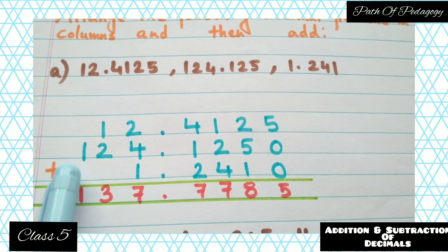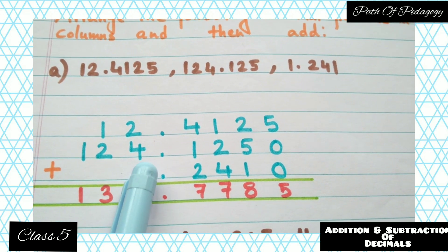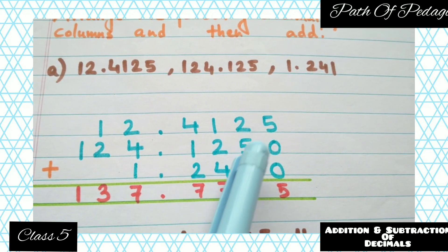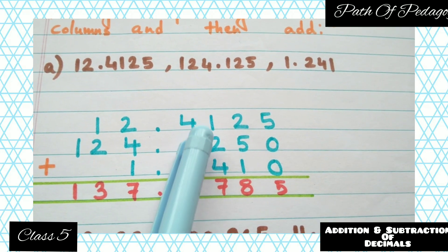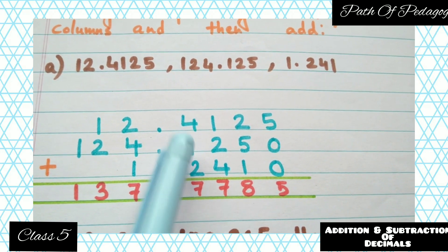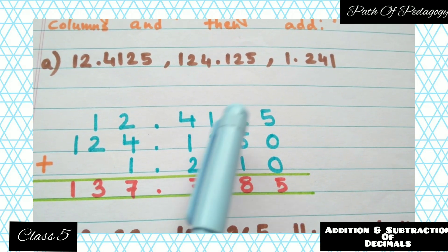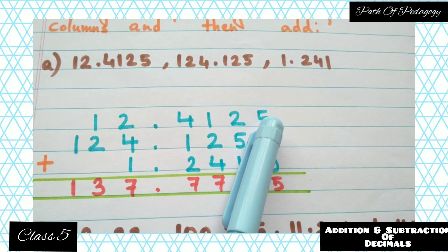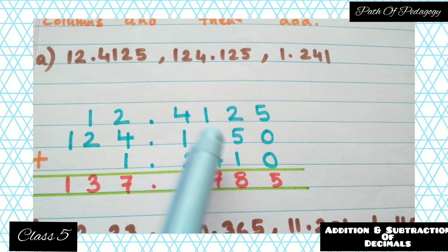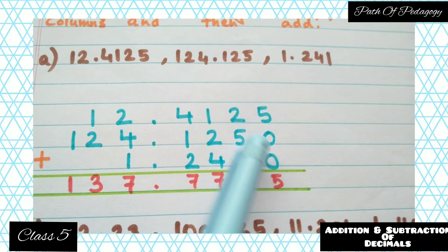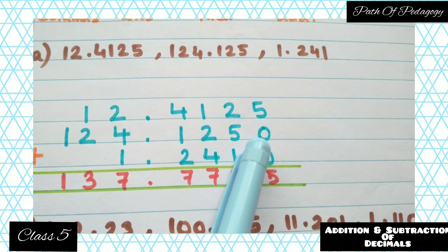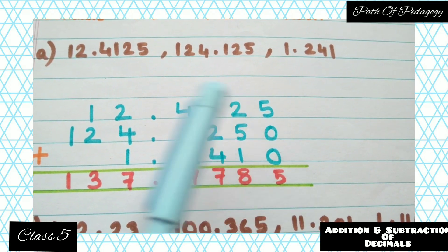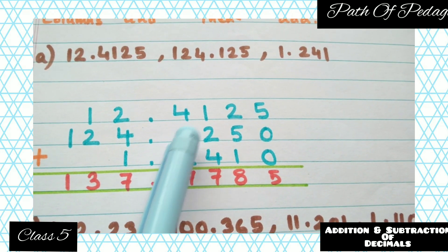For 124.125 — ones, tens, hundreds — just write it down. Now you can see that above this number, after the decimal point there are four digits: 4-1-2-5. But for 124.125 after the decimal point there are only three digits. So for that you have to add one zero to the extreme right — not before, to the extreme right.